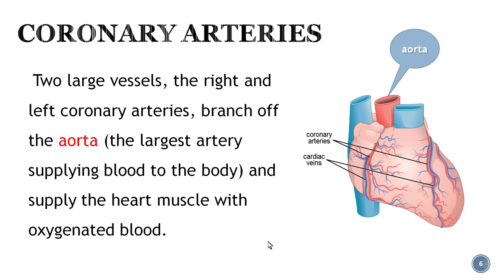Even though the body is filled with arteries delivering blood to different destinations, the heart needs its own oxygen supply. The blood pumped through the heart doesn't reach the heart's own cells, so this organ has its own network of blood vessels — two large vessels called the right and left coronary arteries. These branch off the aorta, which is the largest artery supplying blood to the body from the heart. The aorta branches into the right and left coronary arteries, supplying the heart with needed oxygen.